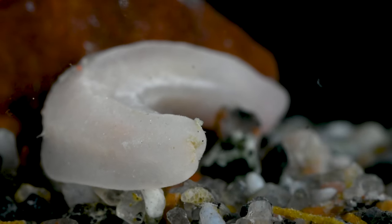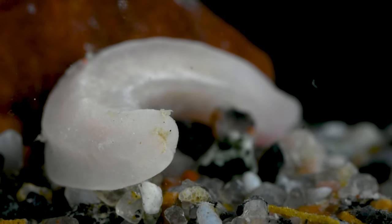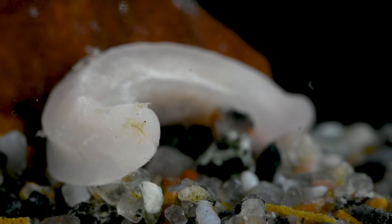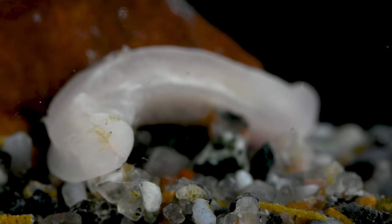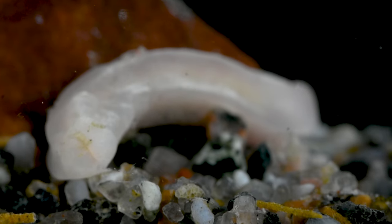At the tail end of the animal is an opening called the mantle cavity. This is where the solenogaster secretes its waste. Strangely, this is also the same opening that they use to breathe.